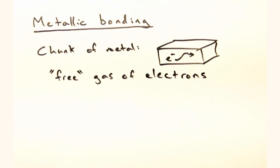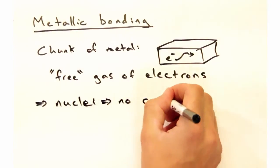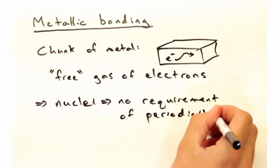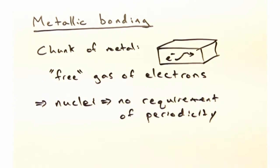I can see how these electrons are spread throughout the material. But what about the nuclei? Are they stuck in their positions? Actually, that's what's surprising, is that in metallic bonding, there is no inherent requirement for periodicity.